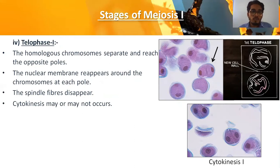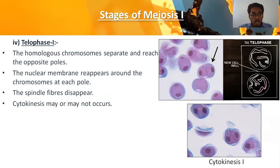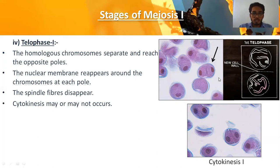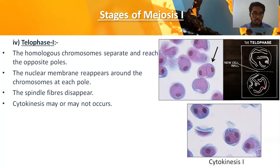In telophase one, the homologous chromosomes separate and reach the opposite poles. The nucleus and nuclear membrane reappear, the nucleolus starts to reappear, and the spindle fibers disappear. This phase ends with cytokinesis one. In some cases the cell undergoes cytokinesis with cell wall formation; in most cases, after telophase one it immediately enters prophase two stage.